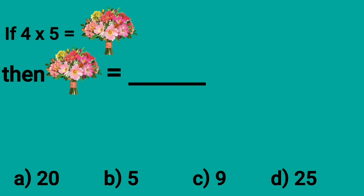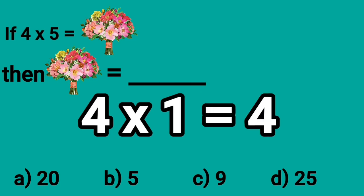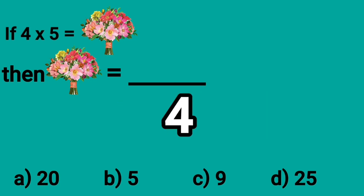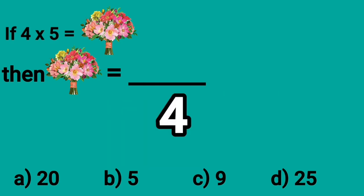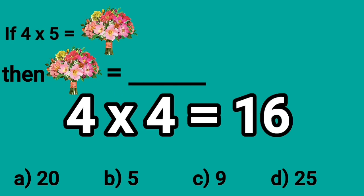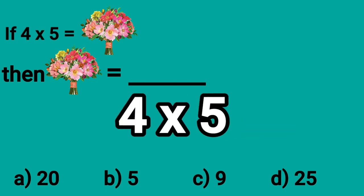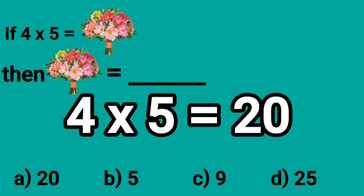So, let's read the table of 4 here. 4 multiplied by 1 is equal to 4. 4 ones are 4, 4 twos are 8, 4 threes are 12, 4 fours are 16, 4 fives are 20.